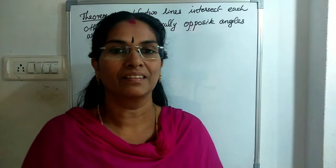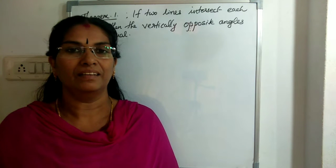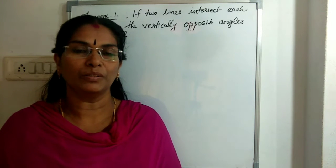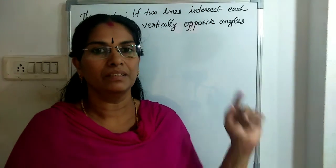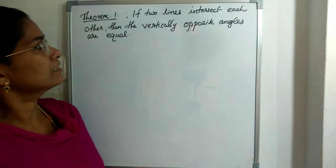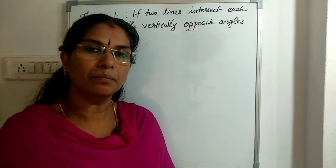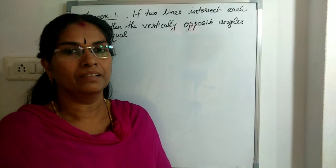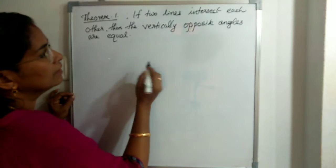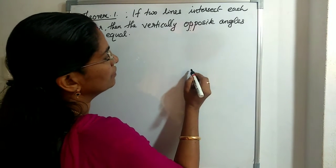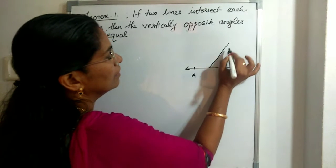Good morning children. In the last class we learned the basic terms and definitions of lines and angles. Today we are going to start Theorem 1 in this chapter. In total, there are eight theorems. The first theorem states: if two lines intersect each other, then the vertically opposite angles are equal. This theorem and its proof are very important. Now we have to prove how these vertically opposite angles are equal.